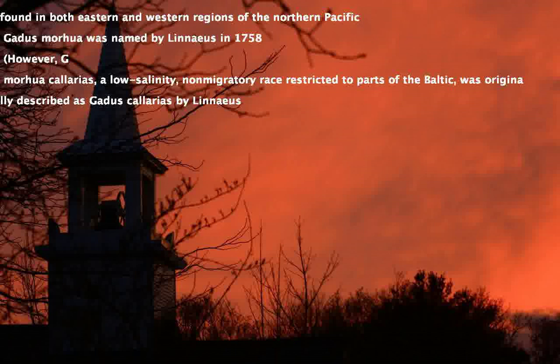Gadus morhua was named by Linnaeus in 1758. However, G. morhua callarias, a low-salinity, non-migratory race restricted to parts of the Baltic, was originally described as Gadus callarias by Linnaeus.